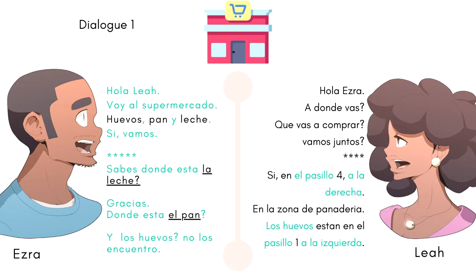Now we are in the supermarket. Oye Lea, ¿sabes dónde está la leche? — Sí, en el pasillo 4 a la derecha. — Ah, gracias, gracias. — ¿Y dónde está el pan? — En la zona de la panadería. — Bueno. ¿Y los huevos? — No los encuentro. — Los huevos están en el pasillo 1 a la izquierda.